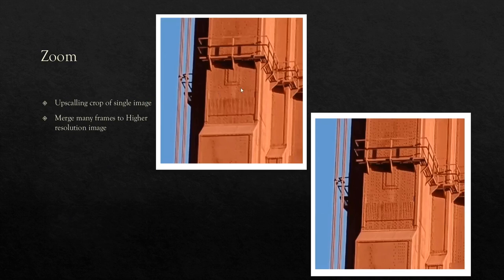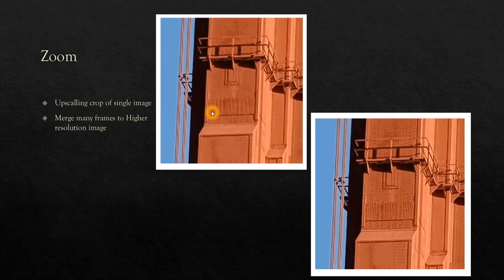Next, zooming is upscaling a crop of a single image. Without the zoom feature, we see an ordinary image, but with zoom, minute features and changes are captured. Zoom works similarly to night mode — it takes multiple frames of the image and merges them into a high-resolution HDR mode output.